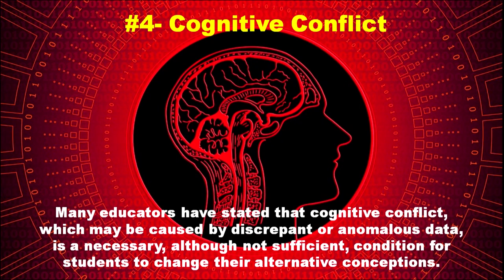Principle number four is cognitive conflict. Many educators have stated that cognitive conflict, which may be caused by discrepant or anomalous data, is necessary, though not a sufficient condition, for students to change their alternative conceptions. Discrepant events are designed to provide novel evidence to challenge students' alternative conceptions. However, teachers should choose proper discrepant events that neither cause student confusion nor frustration. The demonstration of discrepant events is only one of many steps for students to process conceptual change.